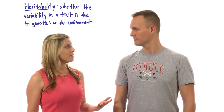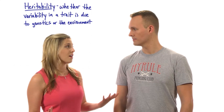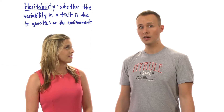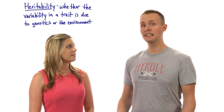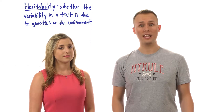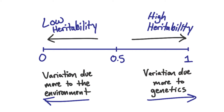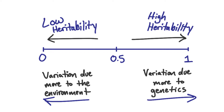This is what we call heritability. Yeah, heritability — we talk a lot about that in psychology. Heritability is measured on a scale from 0 to 1, where 0 means that variation in the trait is not due to genetics at all, whereas a 1 indicates that the variation in the trait can be explained completely by genetics.